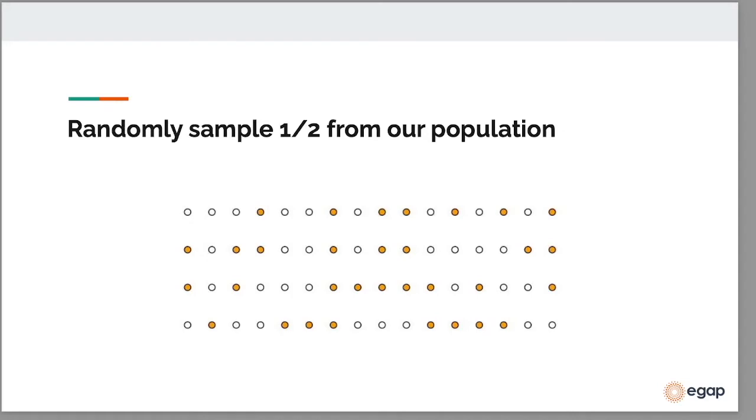You can also do more complicated types of sampling where there are many stages, like randomly sampling individuals within randomly selected cities, or the individual units have different probabilities of being selected into the sample.